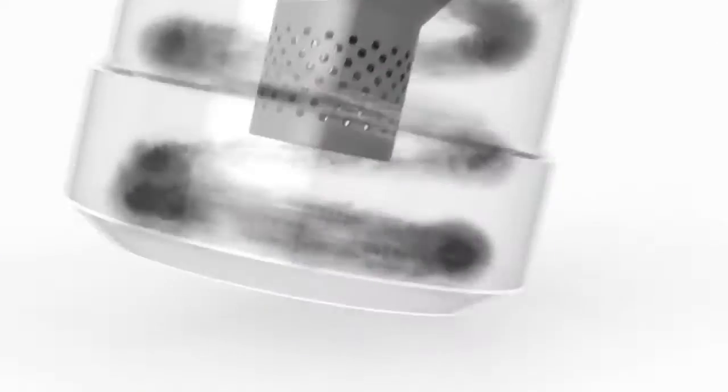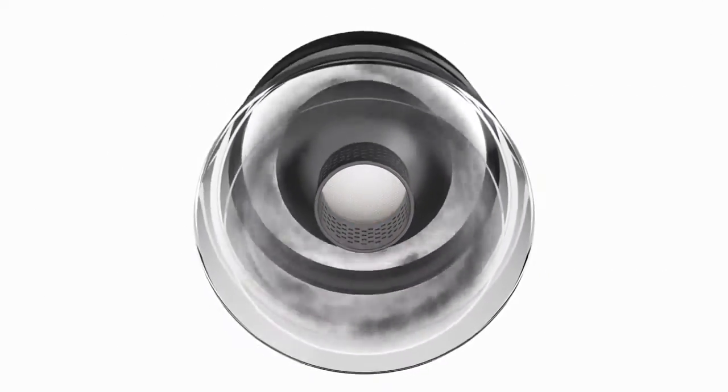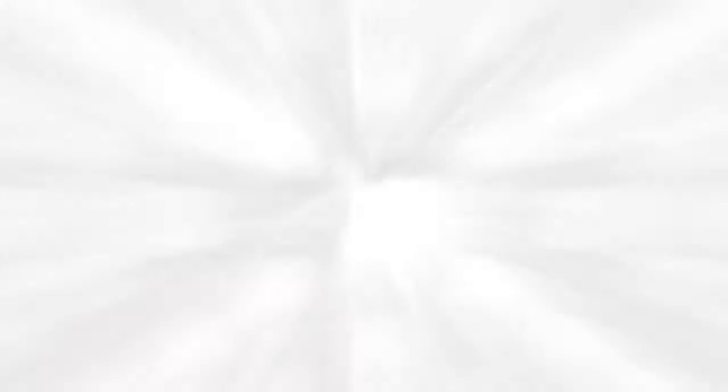Bagless vacuums can lose suction too. Inefficient cyclones that don't separate dust from the airflow mean that dust passes through, clogging the filter and contributing to suction loss.